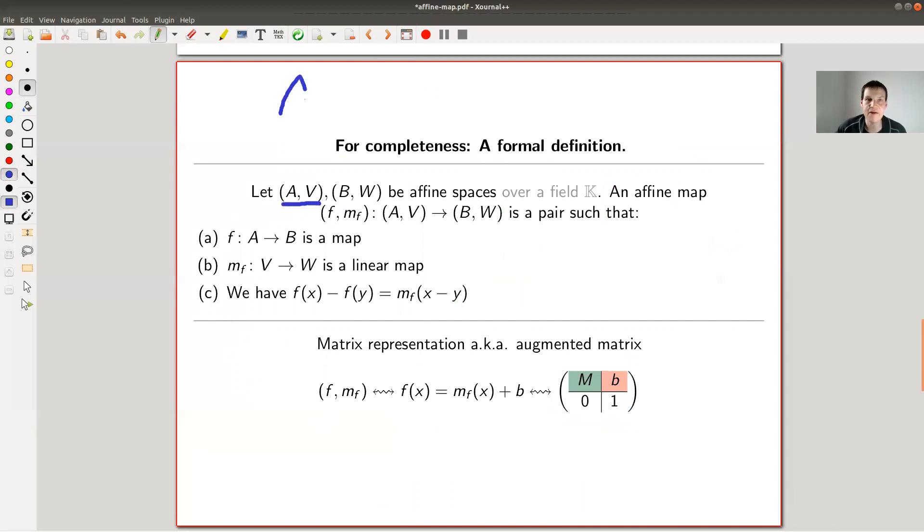So remember, an affine space is a pair of a set and a vector space. And another affine space and the map between them is then also a pair, namely of a set map and of a linear map. But basically everything is built in order to incorporate that those maps are in one to one correspondence to exactly those matrices with M here, the linear part, with B here, the affine part, and with an additional row. The size of this thing depends on the size of M plus one. But that's it. That's an affine map.